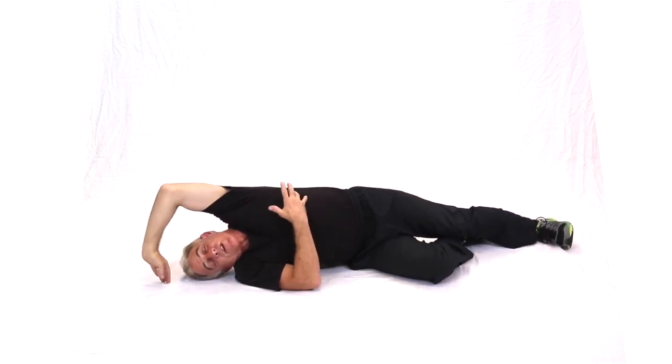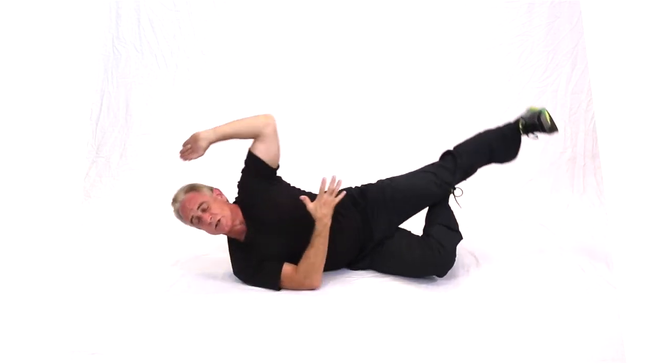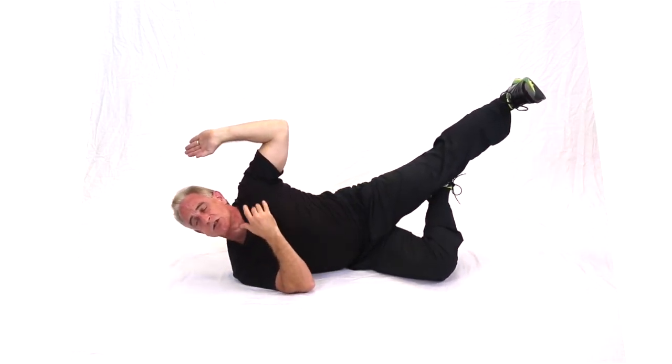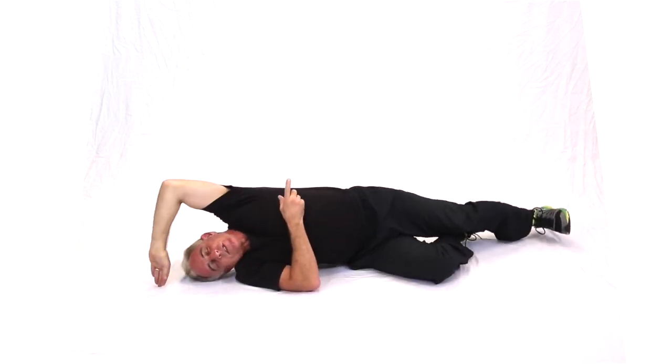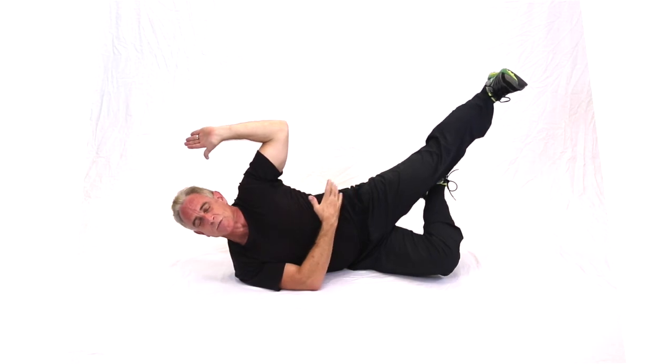And this is really a great move to do against a wall because as you come up you want to keep the head, the shoulder, the hand, the elbow, the heel back against that wall. Makes a total difference to the alignment of the spine and the move.